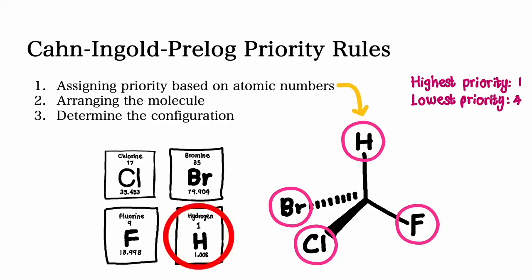The one with the lowest atomic number is assigned the number four, which is the lowest priority group. Hydrogen usually falls in the lowest priority group because its atomic number is one.